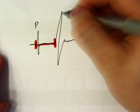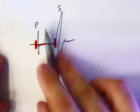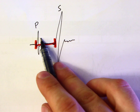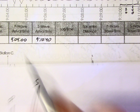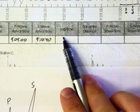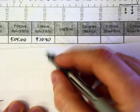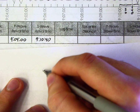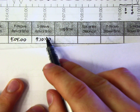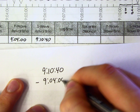Your S wave always goes on top — treat it like a numerator/denominator. So you have 9:10:40 minus 9:04:00. Zero minus 40: you can easily subtract to get 40 seconds. Then 10 minus 4 gives you 6 minutes. 9 minus 9 is zero. So your lag time — the difference between your S wave and your P wave — is 6 minutes and 40 seconds.